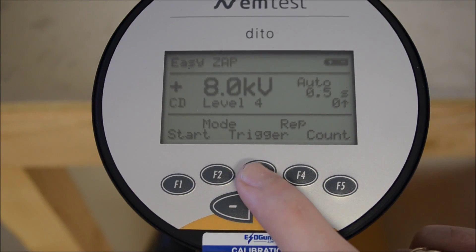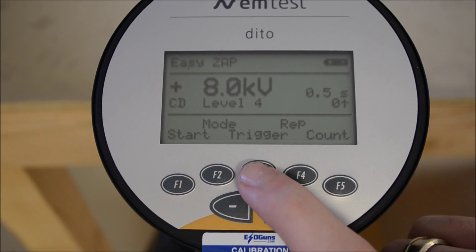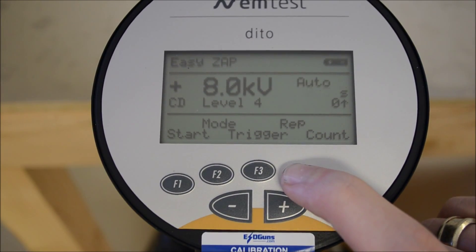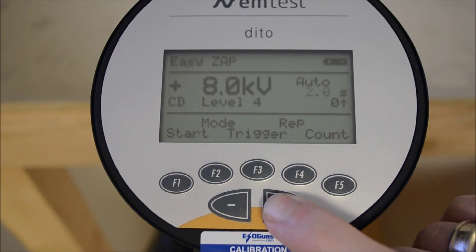F3 allows us to set trigger mode: continuous discharge while the trigger is depressed, single mode for a single discharge per trigger press, and auto mode to activate continuous discharges with the press of a trigger, then terminating the discharge sequence with another squeeze.